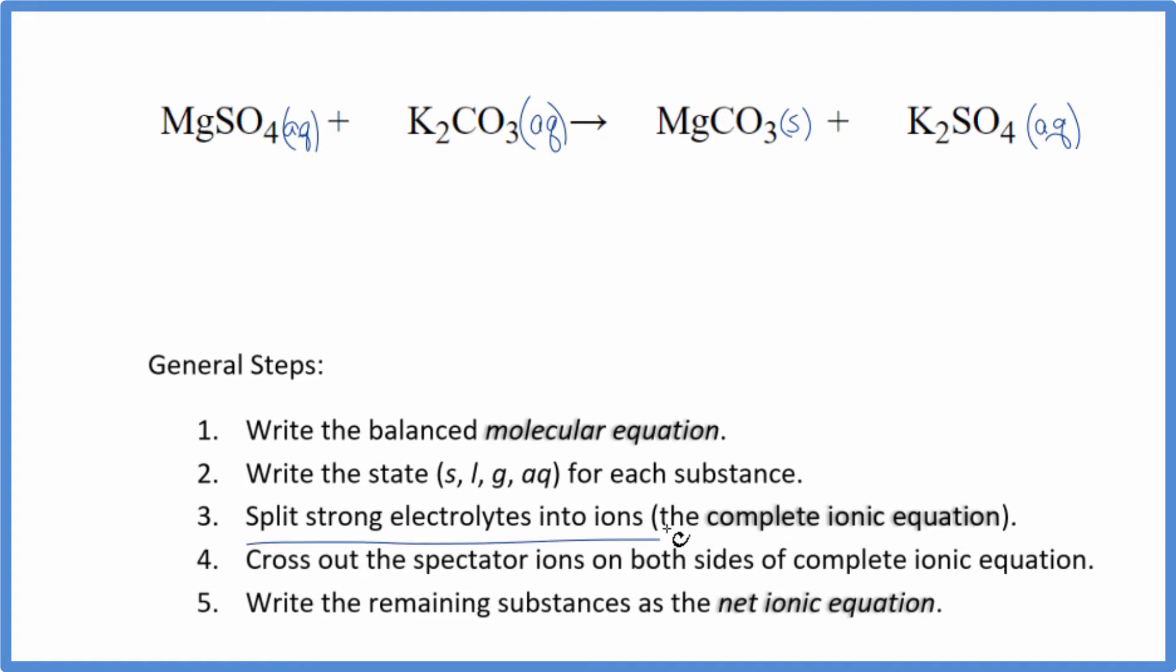Now we can split the strong electrolytes into their ions. That'll give us the complete ionic equation. So magnesium, group 2 on the periodic table, that's going to be 2 plus. The whole sulfate, that's 2 minus. Good one to remember. So we have the magnesium ion, and I won't write the states now. Let's do that at the end. Plus the sulfate ion.